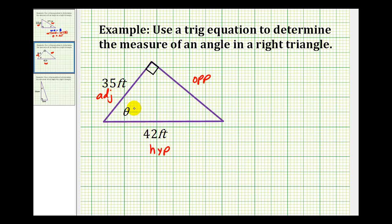So here, we'll write a trig equation that involves the adjacent side and the hypotenuse. That's going to be the cosine function. So cosine theta must equal the ratio of thirty-five to forty-two.